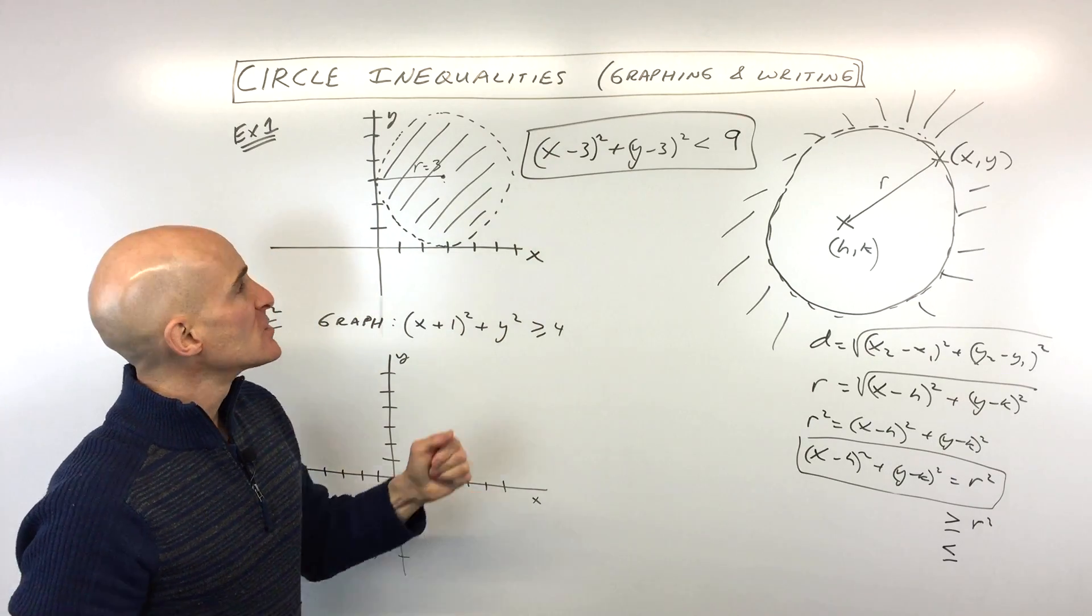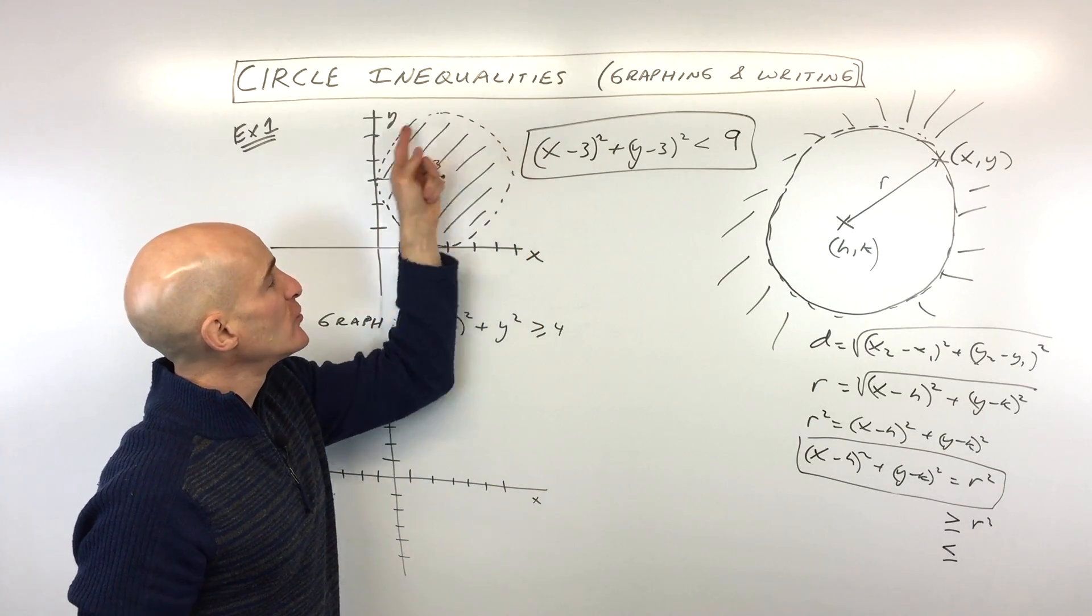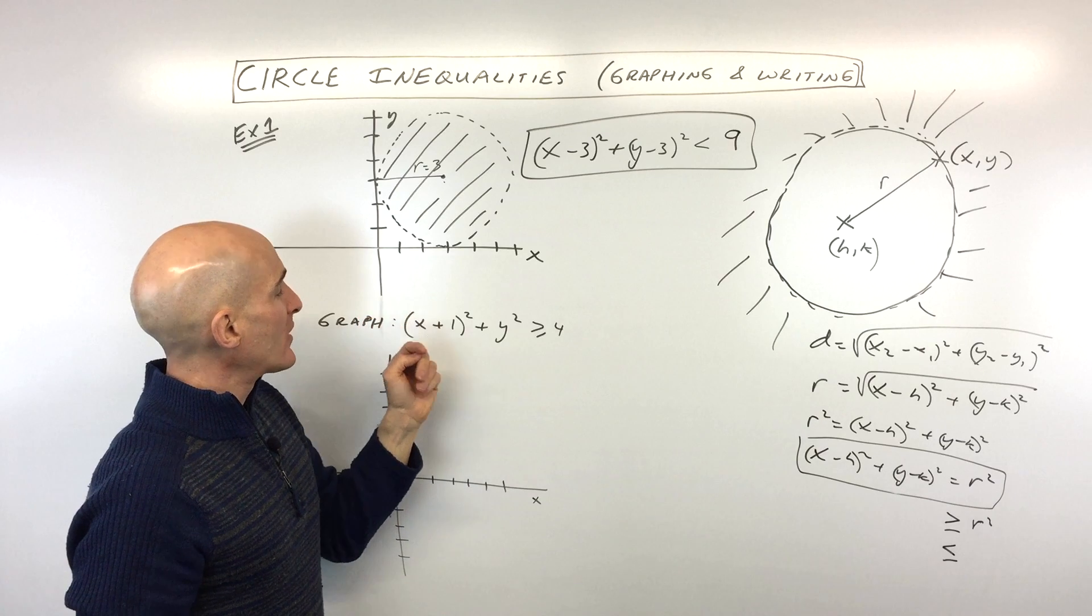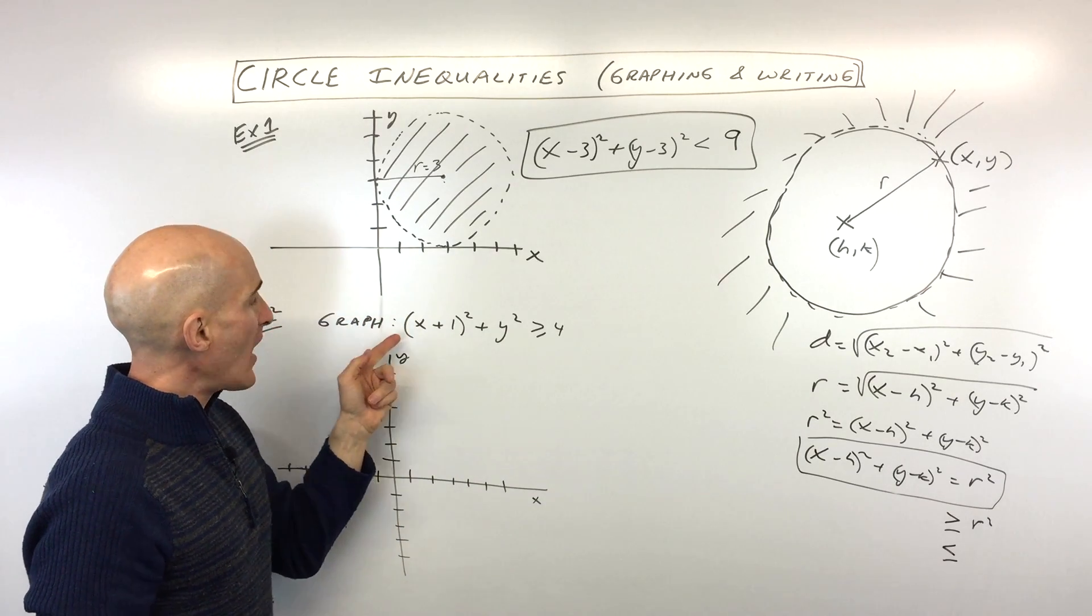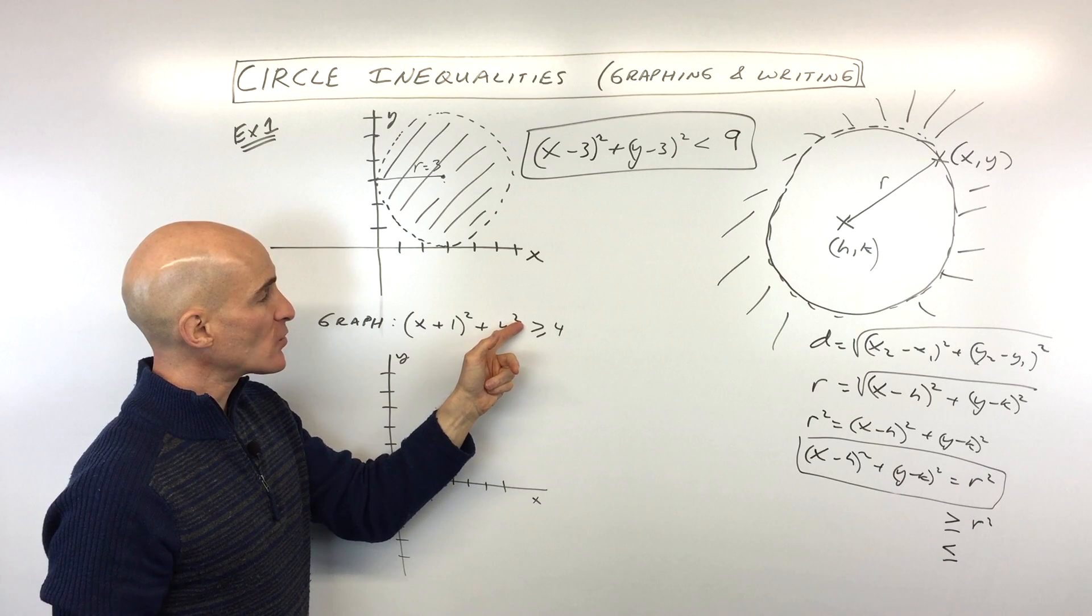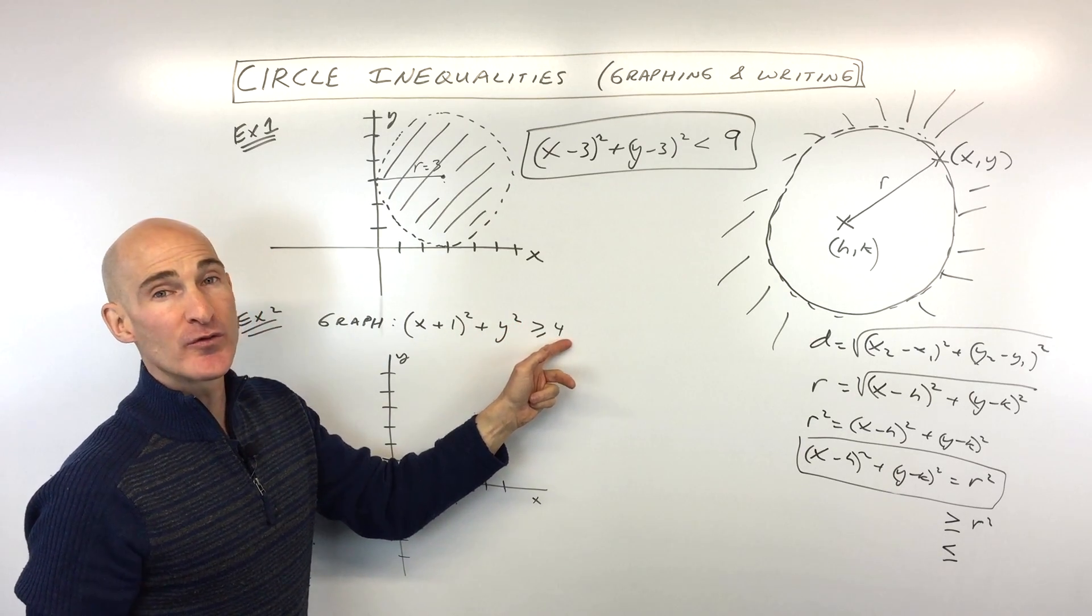So you're with me so far? So now if it was equal to, it would include these points on the circle. Okay, let's do this one here, so number two, it says graph x plus 1 squared plus y squared is greater than or equal to 4.